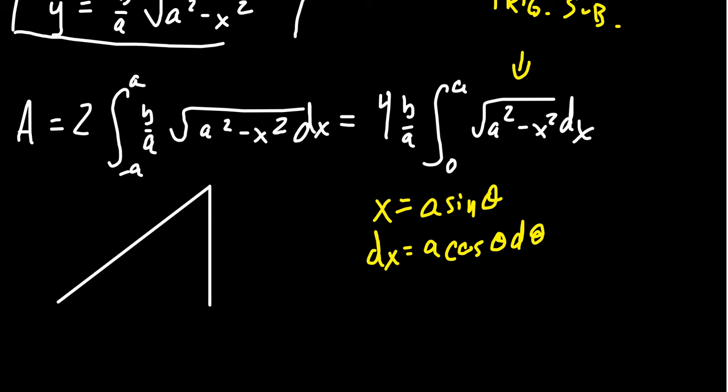Considering the right triangle associated with theta, let's draw the picture. If we think of this angle as our theta, then from this statement we get that sine theta is x over a. The opposite side is x, the hypotenuse is a. If we carry through the Pythagorean equation, the adjacent side is the square root of a squared minus x squared.